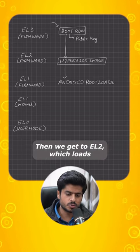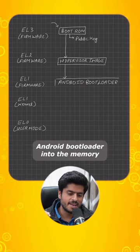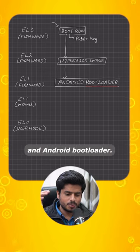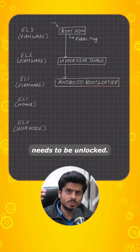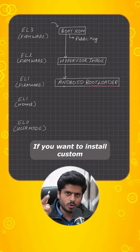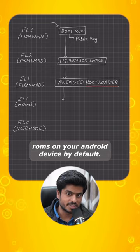Then we get to EL2, which loads the Android bootloader into memory. The Android bootloader is the one which needs to be unlocked if you want to install custom ROMs on your Android device.